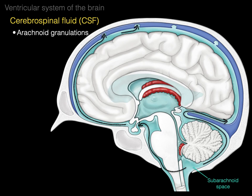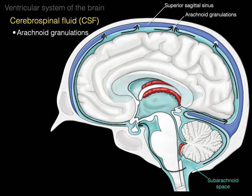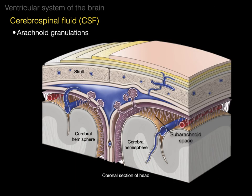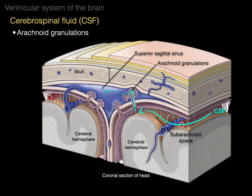The CSF flows up until it reaches structures called arachnoid granulations. The arachnoid granulations filter CSF from the subarachnoid space into the dural venous sinus. There are our arachnoid granulations, which filter that CSF into the superior sagittal sinus — now back into the bloodstream. In the coronal section, there's the subarachnoid space, there are the arachnoid granulations, and that is the superior sagittal sinus. CSF in the subarachnoid space flows into the arachnoid granulations and filters through to enter the superior sagittal sinus.